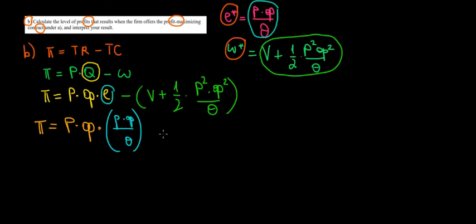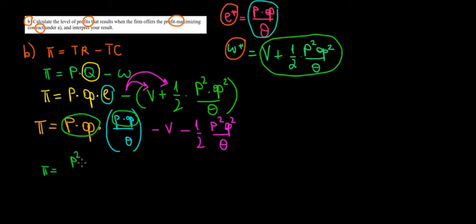Let's open the brackets now. So we go minus V, so minus V minus the other term one over two P squared theta squared divided by theta. Now we can expand this. We can open some brackets here because we have a multiplication P times theta multiplied with P times theta. Well, that's just going to be P squared times theta squared divided by theta minus.